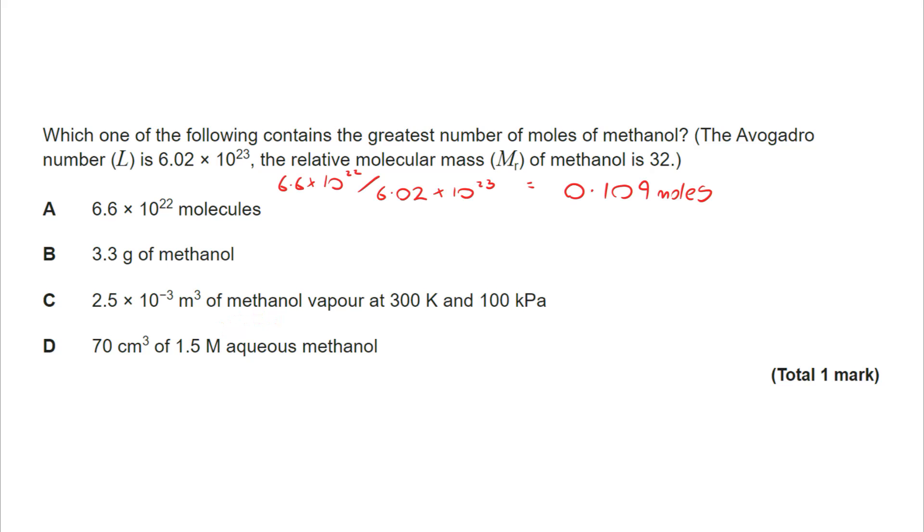So the easiest way to do this is really to go through the calculation. It might be a little bit time consuming, but it's by far the most effective. Now, if I have got 6.6 by 10 to the power of 22 molecules of methanol, I need to find out what that is as a proportion of the actual Avogadro's number. So I do this calculation and I find that I have got 0.109 moles. Remember, we're looking for which of A, B, C and D has the greatest number of moles. If I move on, I look at B. And I can see that 3.3, my mass, divided by 32, my MR, gives me 0.103 moles. Now, at this point, I know the answer's not B, because that's the lower of the two.